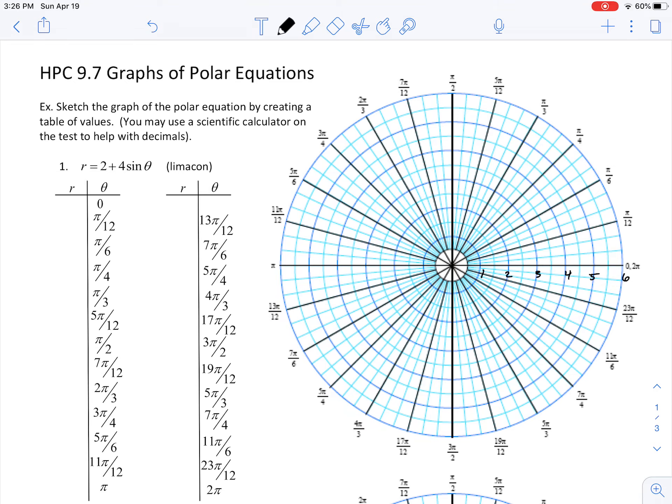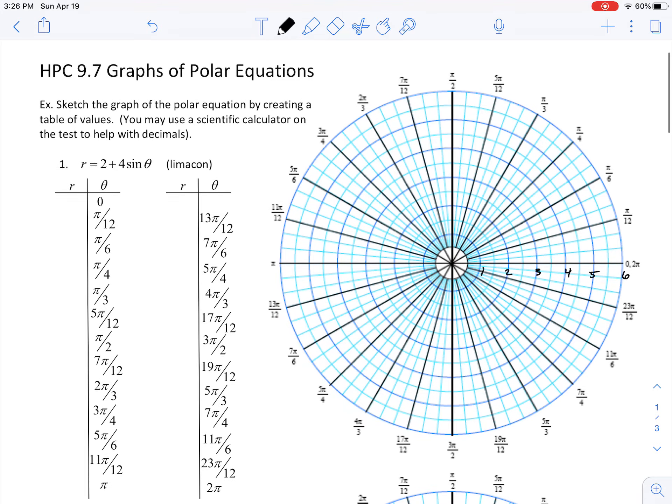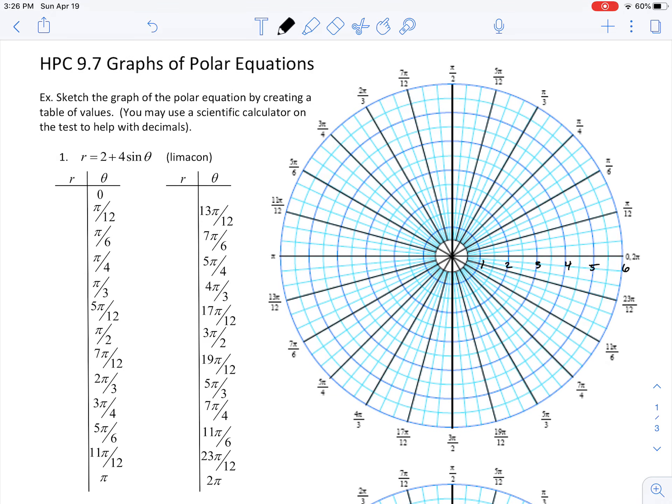Now the polar equation that we're given right here is r equals 2 plus 4 sine theta, and this is a limaçon. It's going to be a particular type of polar graph, and we'll see more and more of these in the next couple of lessons. But what we're seeing here in this equation is that r is a function of theta. In other words, our directed distance, our distance from our pole or our origin right over here, is going to be completely dependent on what theta is here.